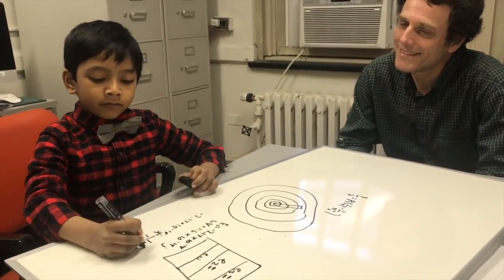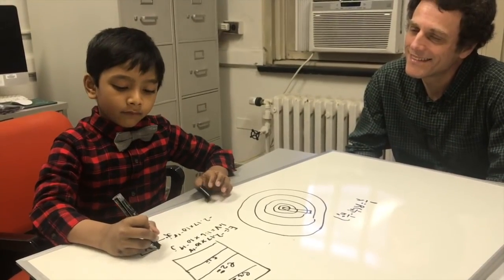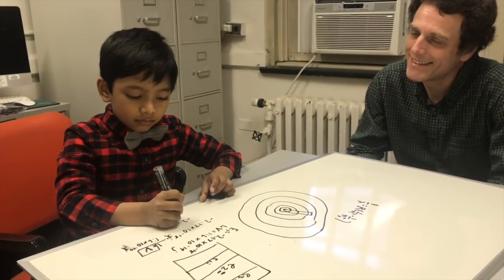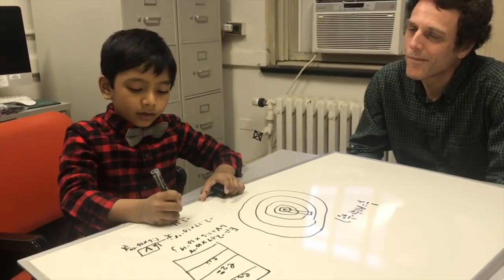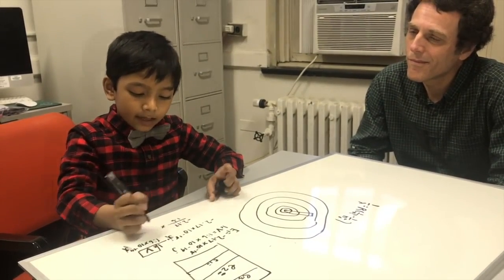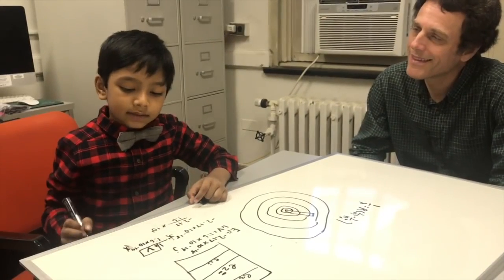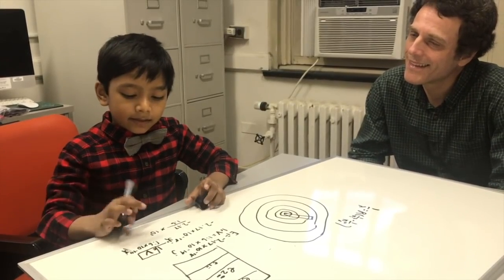We can cancel out the joules. So, the only unit remaining will be the electron volts. Oh, good. That's what we wanted.